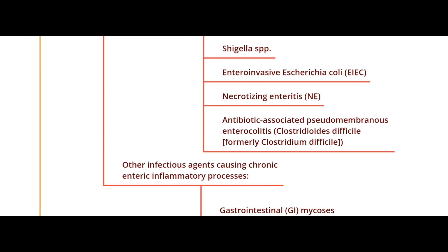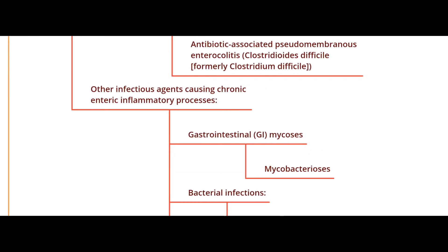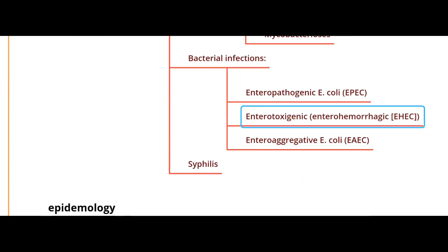Other infectious agents causing chronic inflammatory diarrhea include mycoses of the GI tract, all types of mycobacteria, specific types of E. coli that can cause long-term infection, syphilis, and some types of viral infections in combination with bacterial opportunistic infections — but this is outside the scope of this specific video.